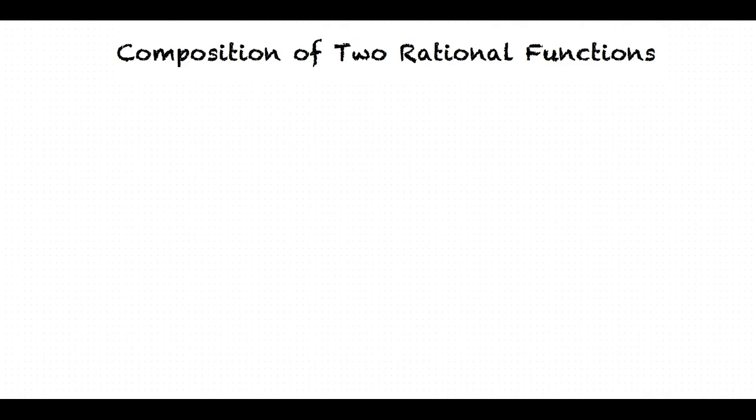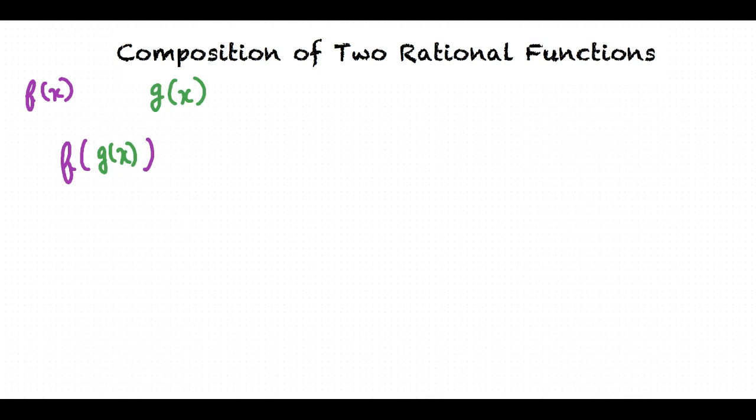This video will cover the topic of composition of two rational functions. What do we mean by composition of two rational functions? Let's say we have two functions f and g. We can say that the expression f is a composition of two rational functions, because we can see that the function f is composed of the function g.